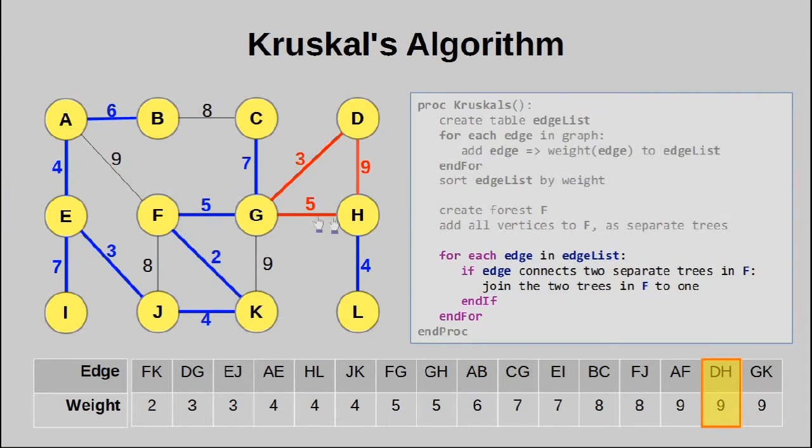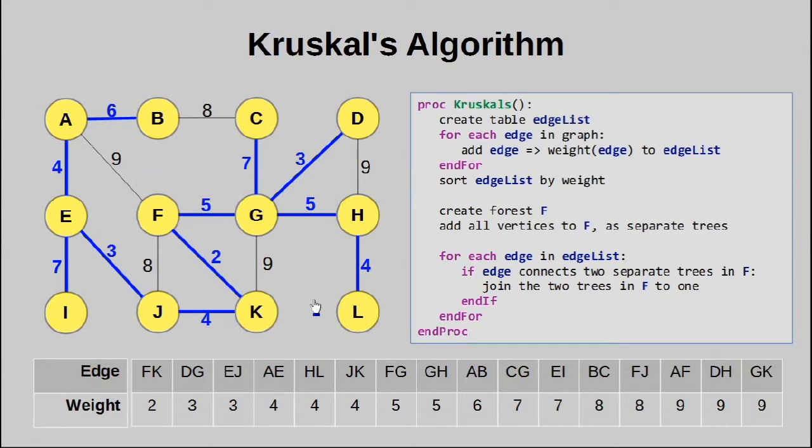DH creates a cycle here. As does GK, which creates a cycle here. And that explains why we cannot pick any one of these edges. We have to stop where we've stopped earlier. So yeah, that is Kruskal's algorithm.